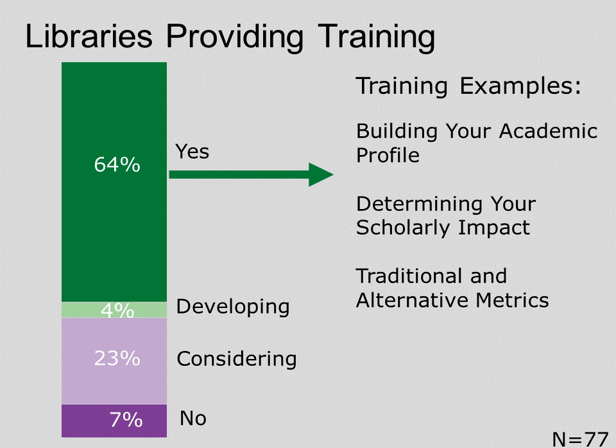The library staff who provide output assessment services are frequently providing training to their users too. When we asked specifically about training for scholars, researchers, staff, or students, 64% reported they are already offering training, with another 27% currently developing or considering developing training. Several different formats were mentioned, including workshops, drop-in sessions, brown bags, and ad hoc classes. Based on the titles provided, we can see that training sessions are often focused on specific resources, like Scopus or Web of Science, but libraries are also offering broad-based sessions like building your academic profile and determining your scholarly impact.